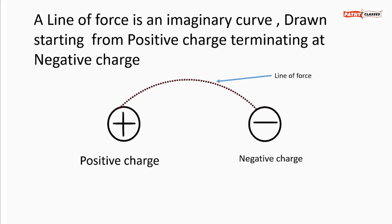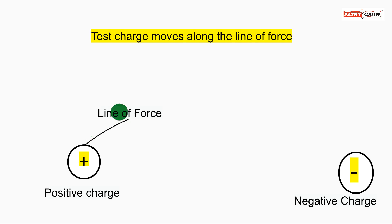Here, the line of force is shown by a dotted line. Suppose the green colored one is a test charge. Then the path along which this test charge is moving is called the line of force, also called field lines. It is shown by black color.